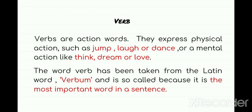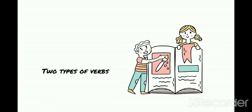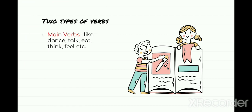Now let's move further. Your verbs are of two types. The first one is the main verb, which talks about the action — this action can be physical or mental. For example, a physical action: the girl danced dutifully on the stage. Here, the action the girl did is dance. Another example: I ate my food at eight in the morning. The action here is ate.